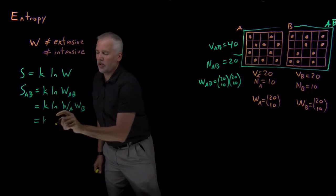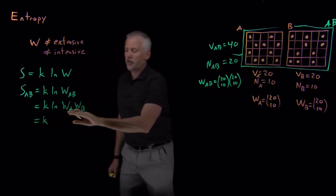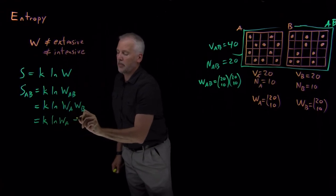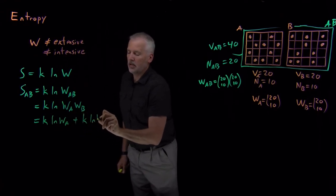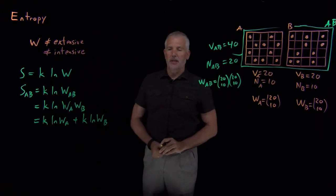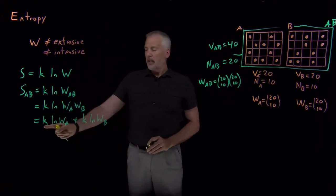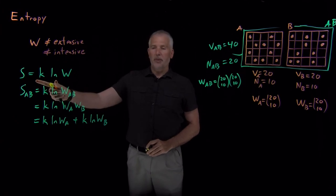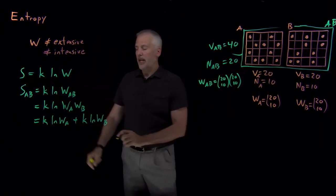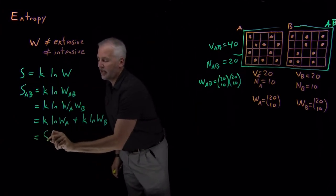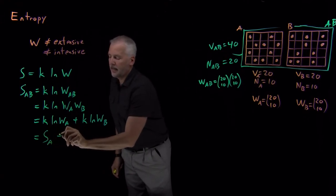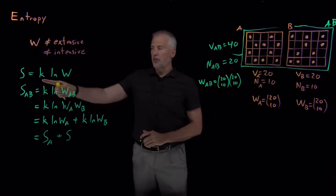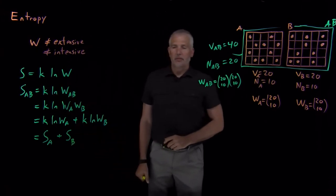Logs behave in a way that the log of this product, log of wA wB, that's equal to the log of wA plus the log of wB, both of which are still multiplied by this constant K. But K times the natural log of a multiplicity, that, according to our definition up here, is just this new property S. So that's the S for system A, and then added to K log wB is this new property S for system B.